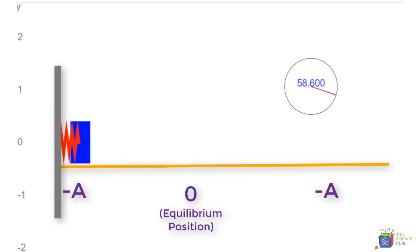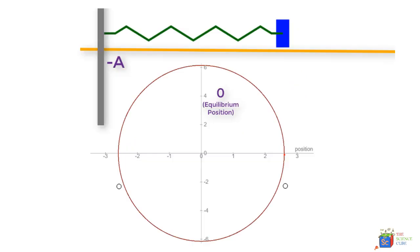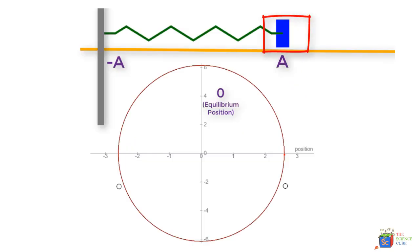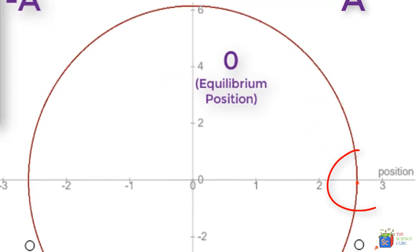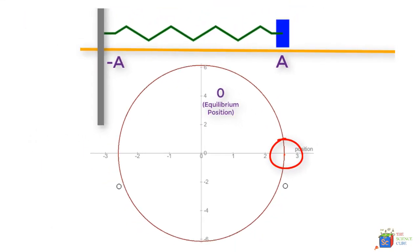It might sound confusing, so let us consider this setup where the mass is at extreme right position, and the same mass is represented on a circle by this dot. You see this tiny little dot? Please keep an eye on it; it's quite small.